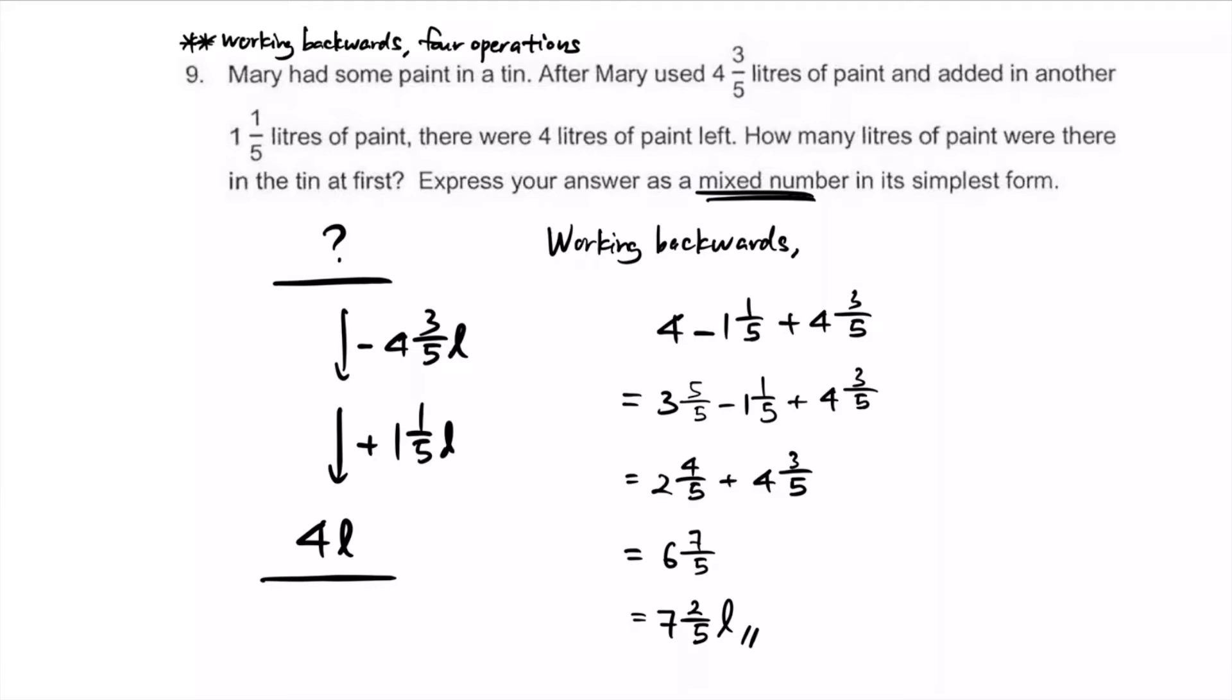Instead of adding here, we pretend it wasn't added, so that's subtraction. Pretend this wasn't used, so that's addition. Step by step: 4 wholes, we subtract 1 1/5 and add 4 3/5. I converted this to 3 wholes and 5/5 because it's easier to work with. 5 minus 1 is 4/5, and 3 minus 1 whole is 2 wholes. The addition gets us 6 wholes and 7 for the numerator. Because this is improper, I'll carry 1 whole to my 6 wholes, that's 7 wholes, and minus 5 we get 2 wholes - sorry, 2 as the numerator. That's our answer: 7 2/5 liters.